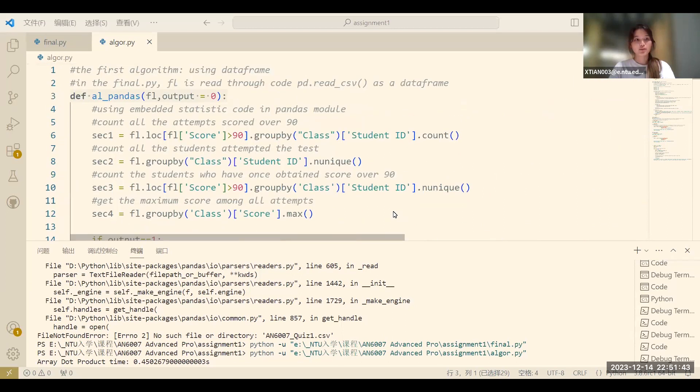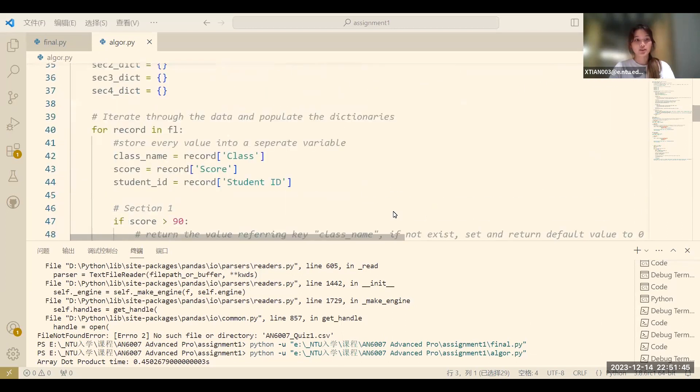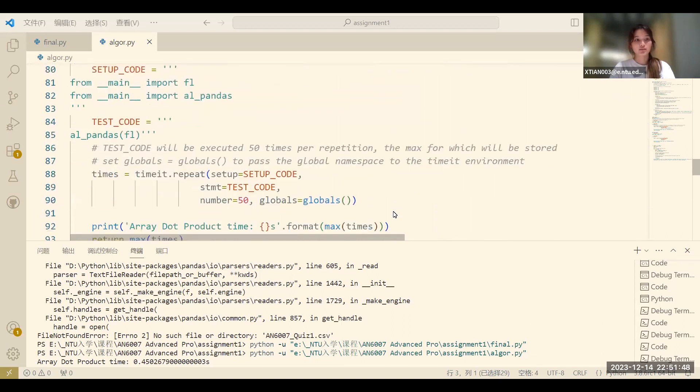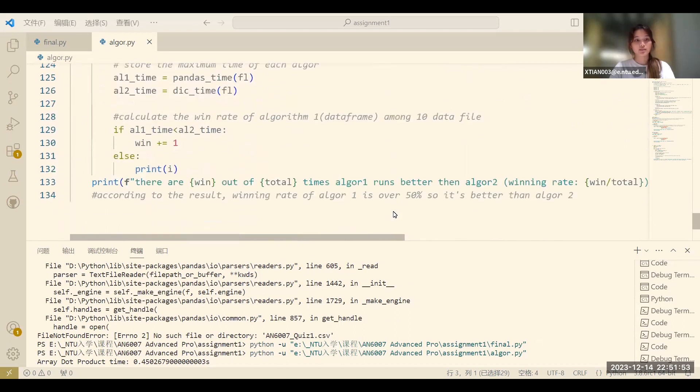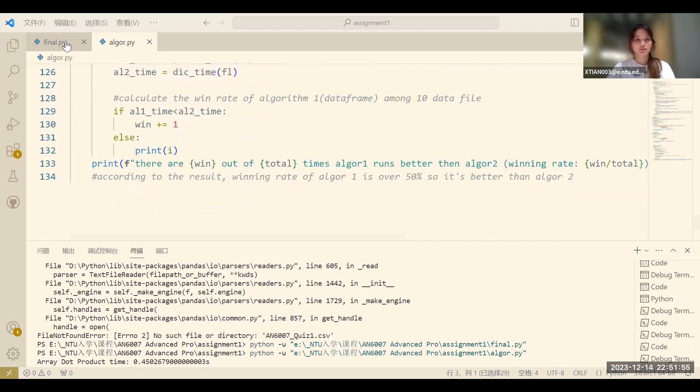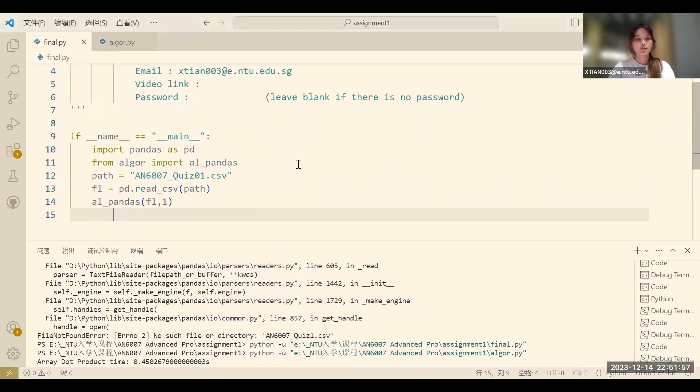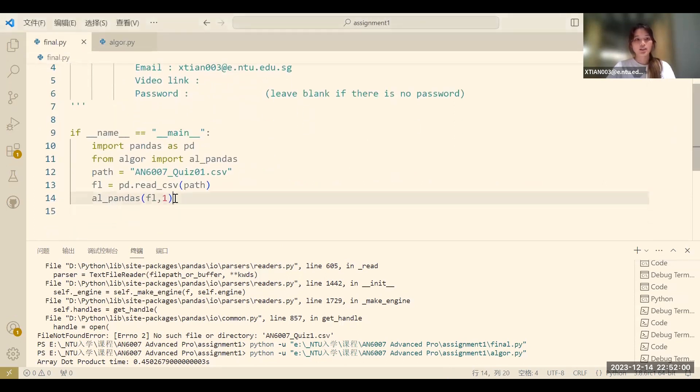This is the algorithm file. You can see the four functions here and the main selection process. This is the final lesson file. Here I set the output parameter to 1. It means that it will output the table.